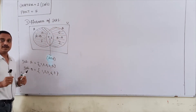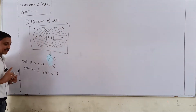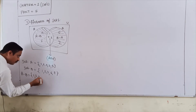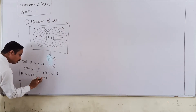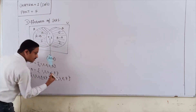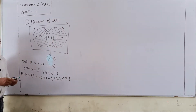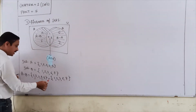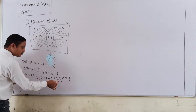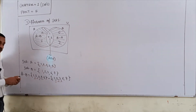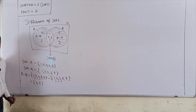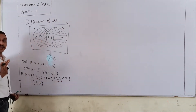Now I explain A minus B. A minus B is nothing - same numbers you delete from the A side. A is 1, 2, 3, 4, 5 and B is 1, 2, 3, 6, 7. Just check the same numbers: 1 is same, 2 is same, 3 is same. Only and only you have to keep 4 and 5. Now this 4 and 5 is only the answer for A minus B.